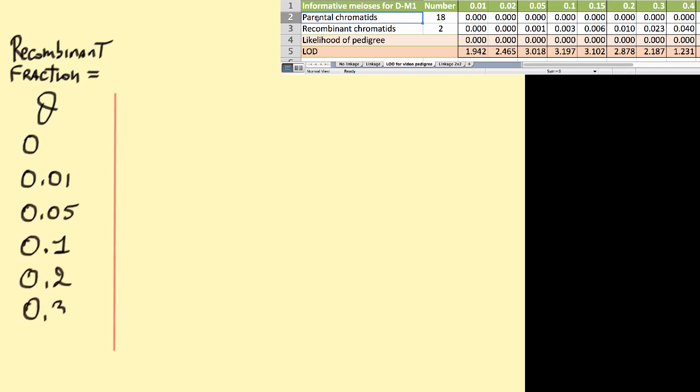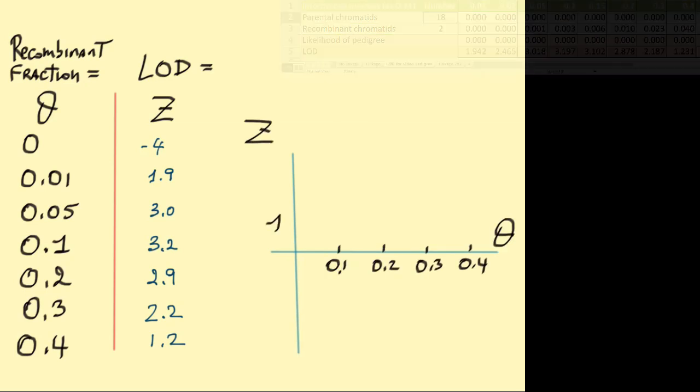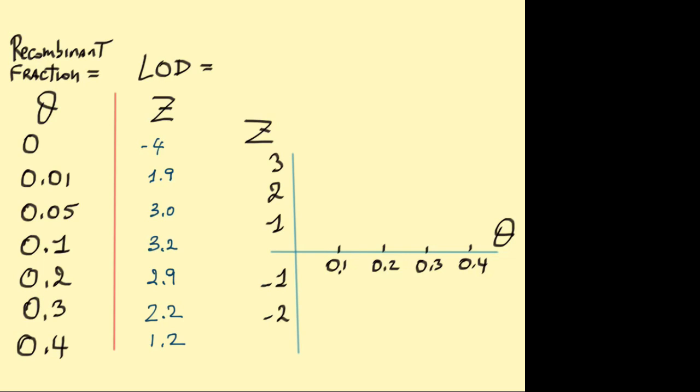Sometimes, LOD is called Z to make things slightly more complicated for students. We get, in this case, from very low Z or LOD at near zero theta to a maximum of 3.2 LOD or Z.